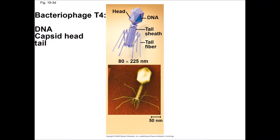A T4 bacteriophage is like tobacco mosaic virus in that it is only made of nucleic acid and protein. But unlike tobacco mosaic virus, its capsid is complex with a head and a tail. It uses DNA as its hereditary material, not RNA.